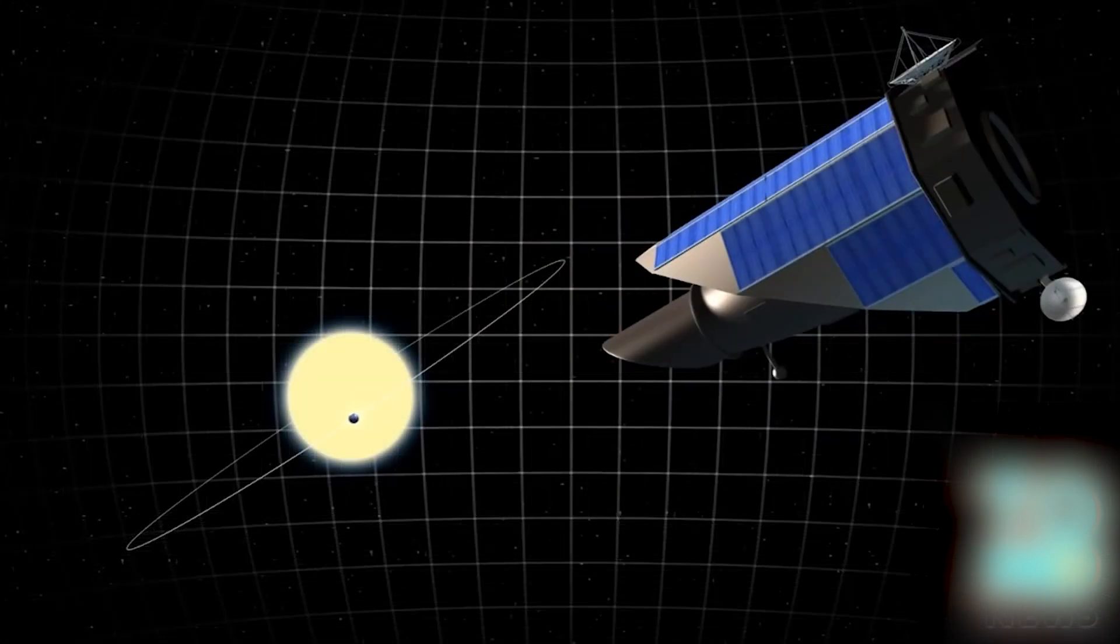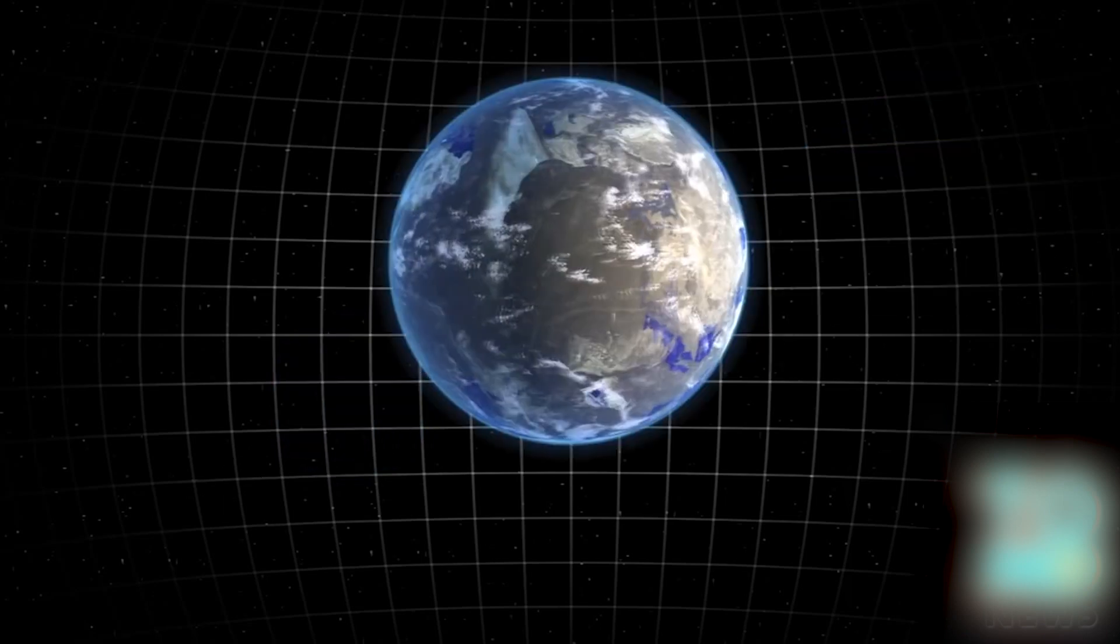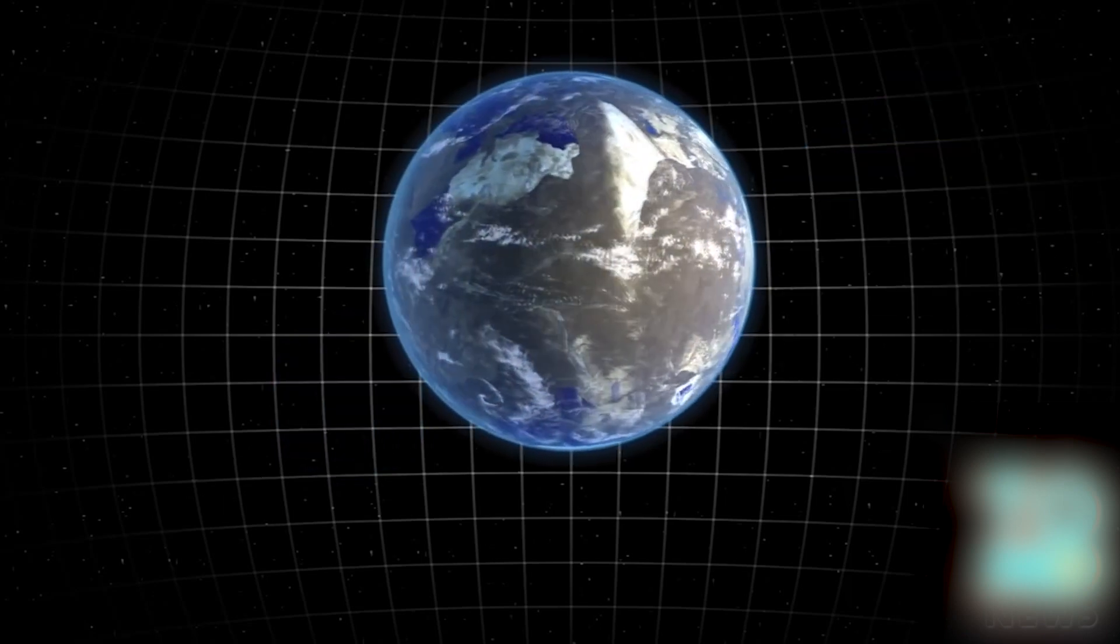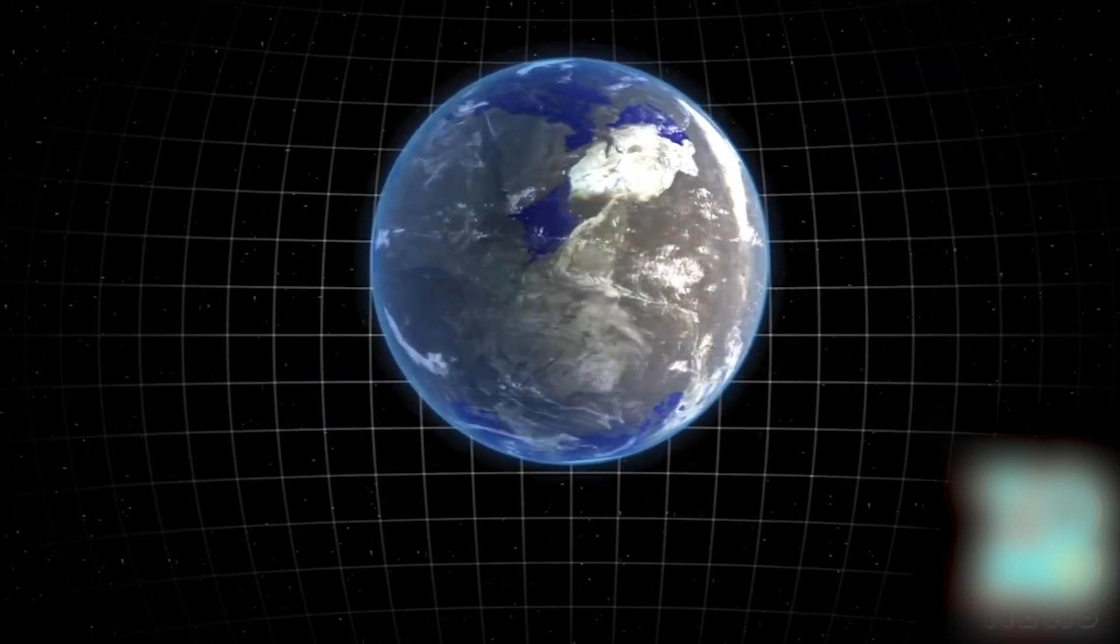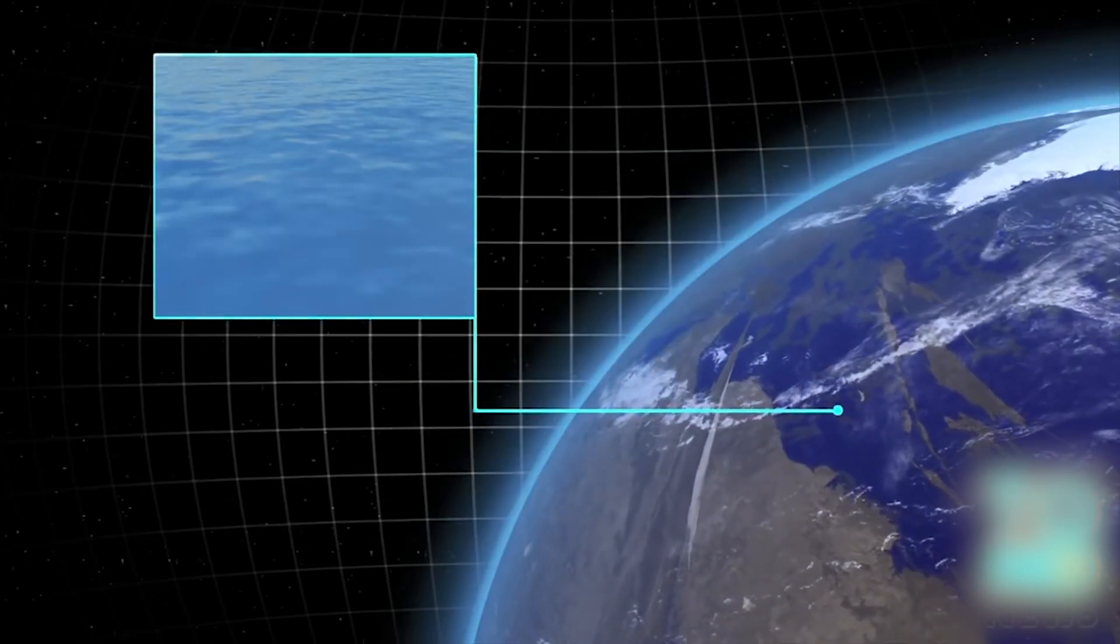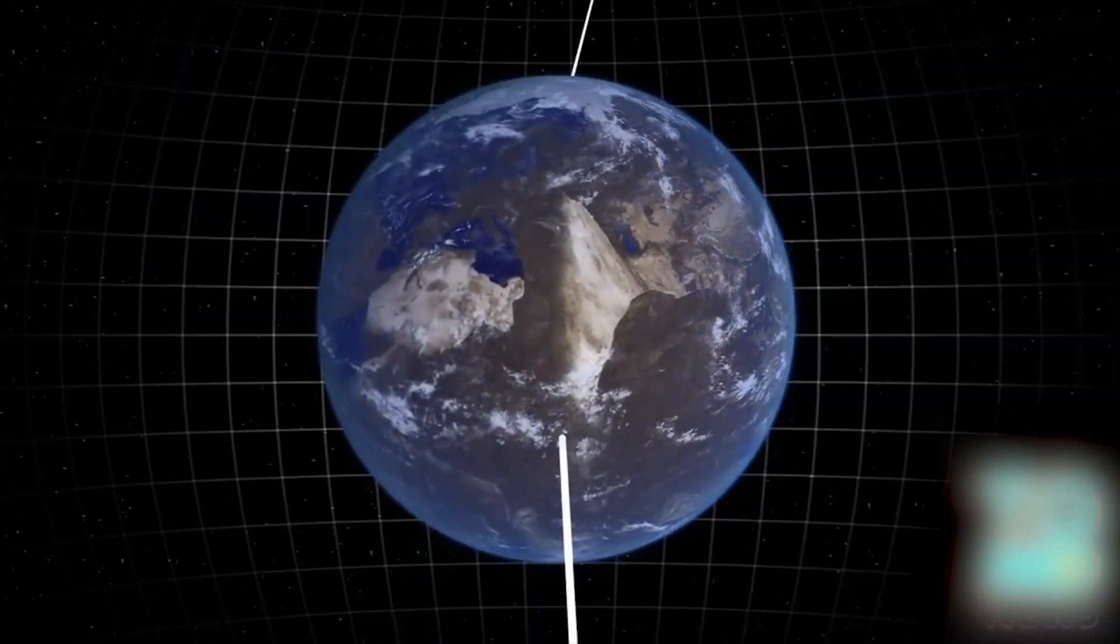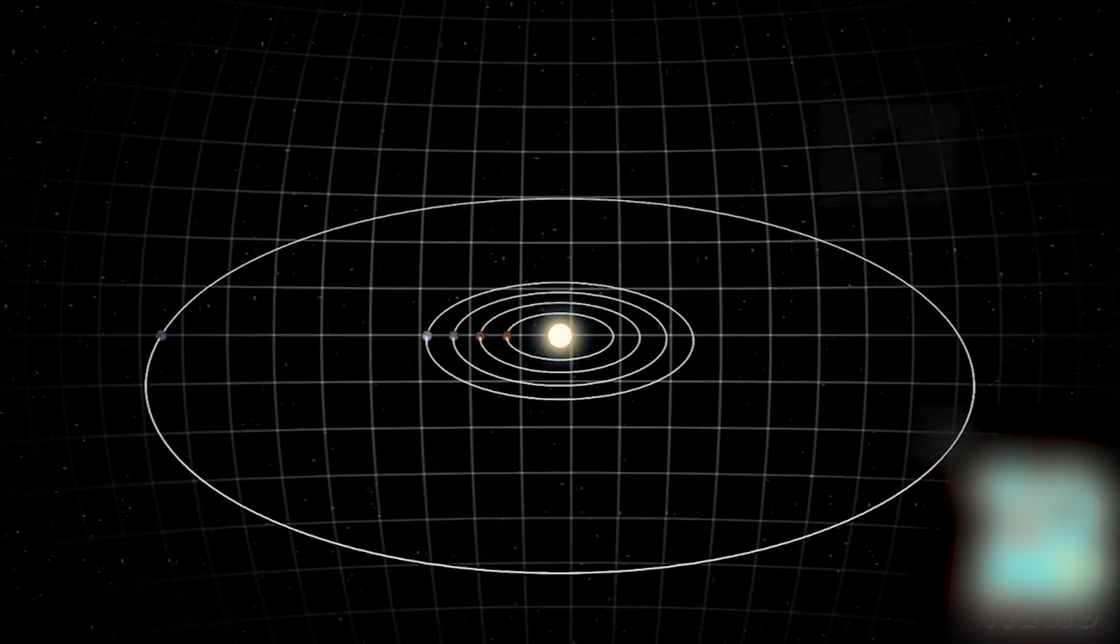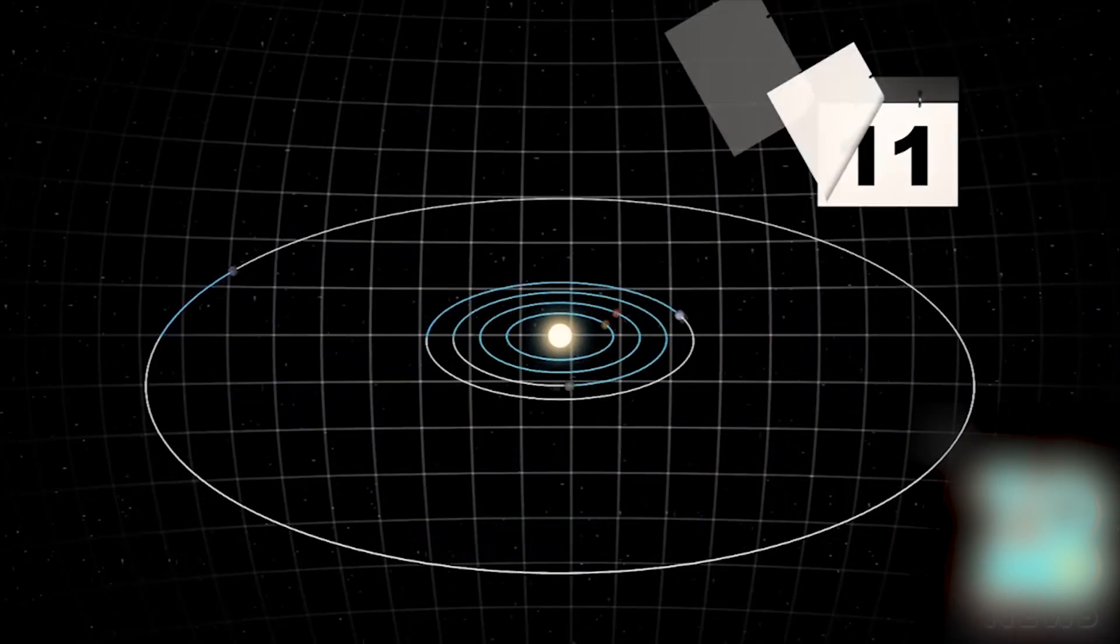Scientists used this data to calculate the planet's size and estimates its mass and density. Kepler-186f is 1.1 times the size of Earth and lies at a distance from its star that would allow liquid water to exist on its surface. It is the outermost planet in the Kepler-186 system, which has four known inner planets.